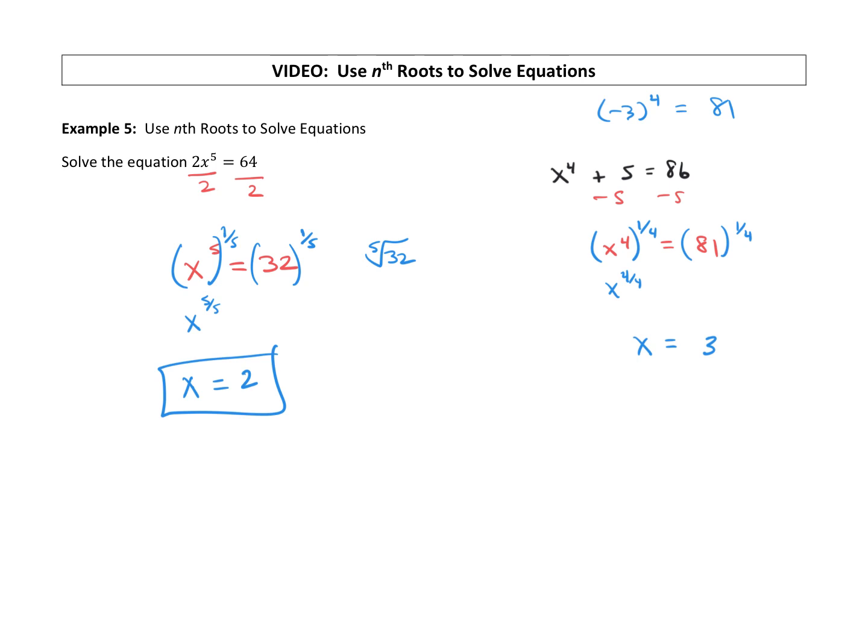So even roots are going to have two solutions. We need to include the plus or minus. If we're taking an even root, or if we're dealing with an even exponent—essentially we took an even root over here when we were solving—so look out for that one.